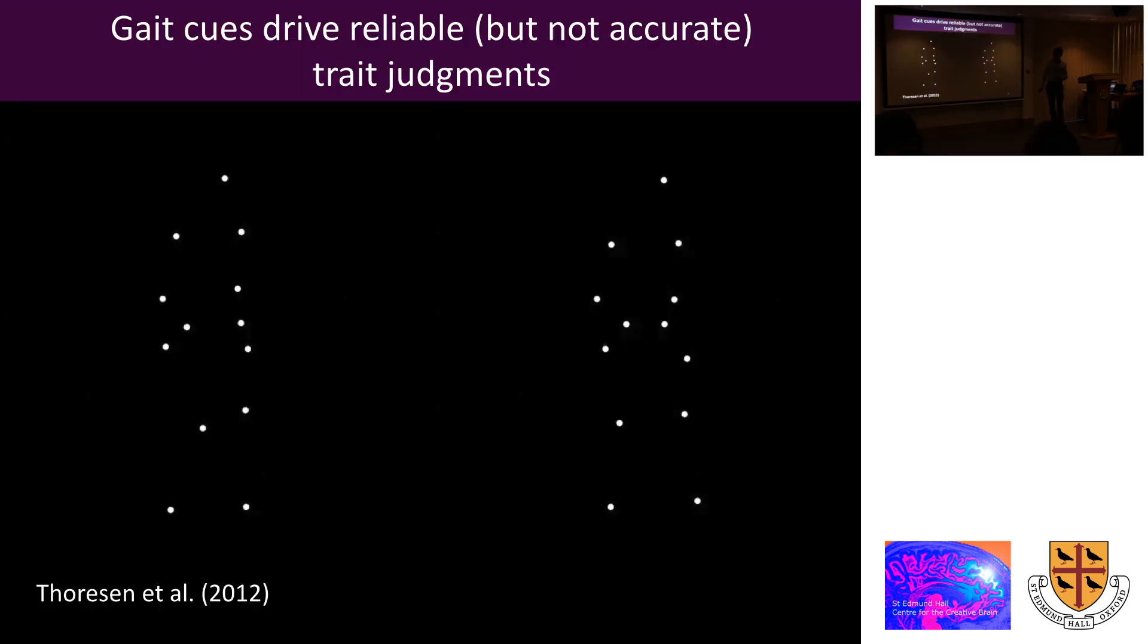I've also gone on to do some work with a former PhD student at Durham, where we motion captured people walking across a room and we created these point light displays of that and then we had observers judge the personality traits of these people on the so-called big five personality traits, primarily such as extroversion, introversion, and adventurousness and things like that. So here's one walker, and here's another. They're fairly simple movements.